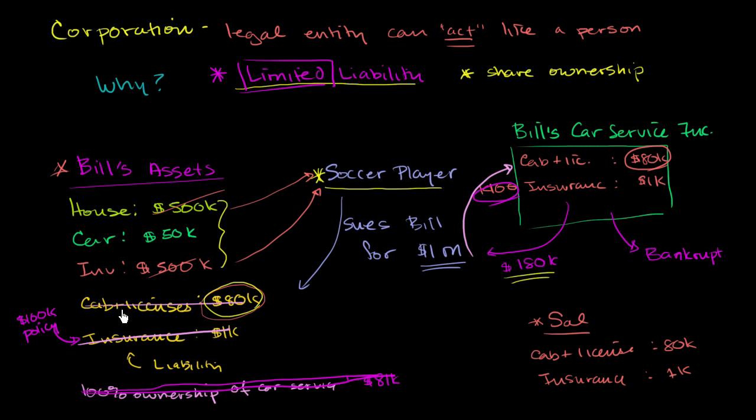If Bill had to directly own the assets, the cab and licenses, even though Bill's and Sal's upside from the business, the profit they could make would be the same, Bill's downside would be more, because if he didn't have the corporation, he would have all of these other assets at risk.